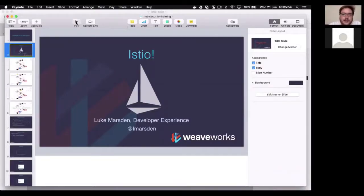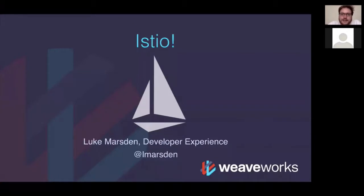Let's dive straight in. Istio has an exclamation mark in the title because it's exciting — a brand new piece of technology that's been open sourced by Google, IBM, and some other partners. It's always nice when you get cool new technology to talk about. Lots of people have been asking about it, so it's really nice to present a little bit about Istio, which is a service mesh.